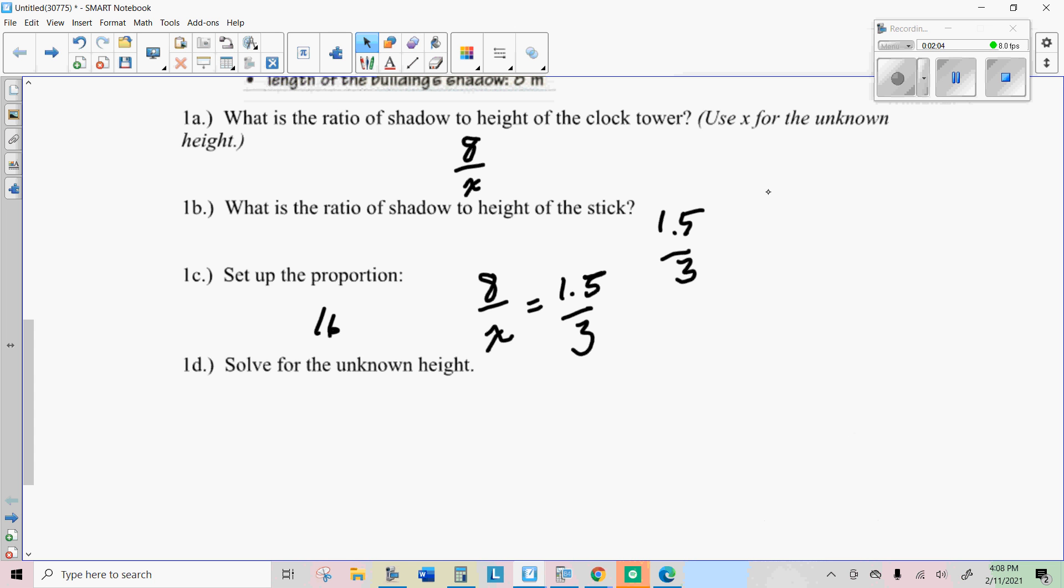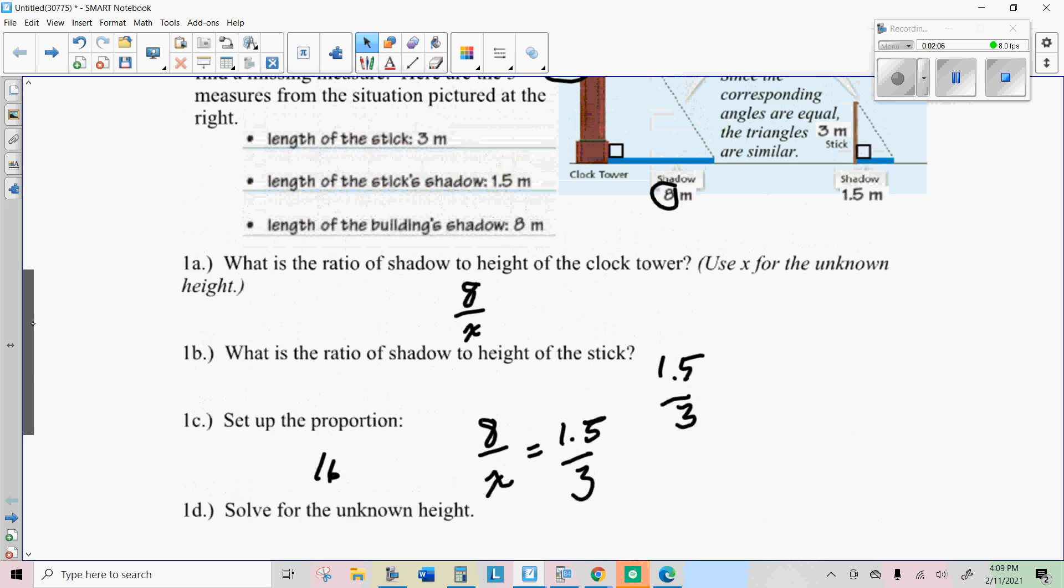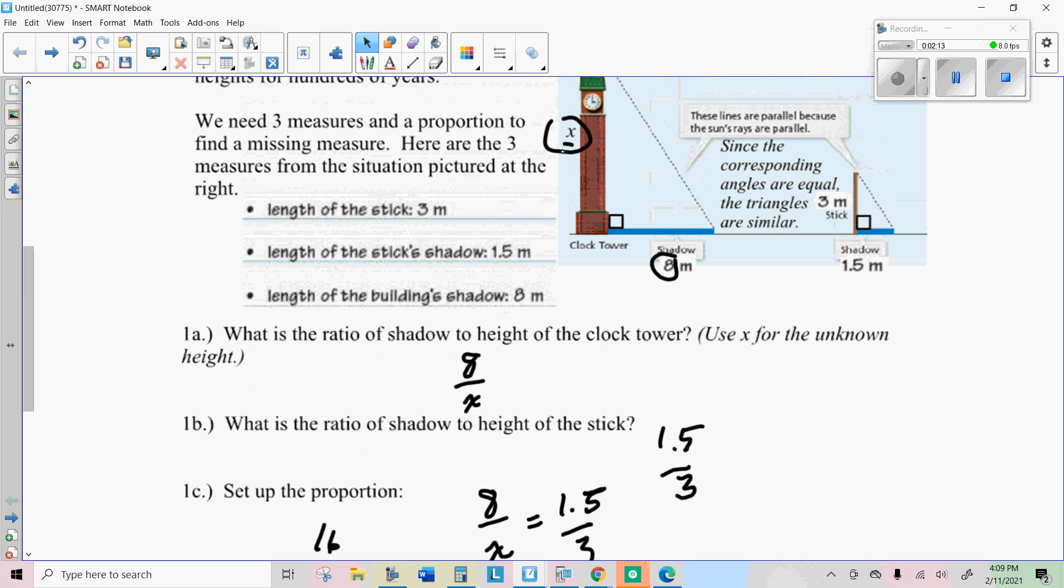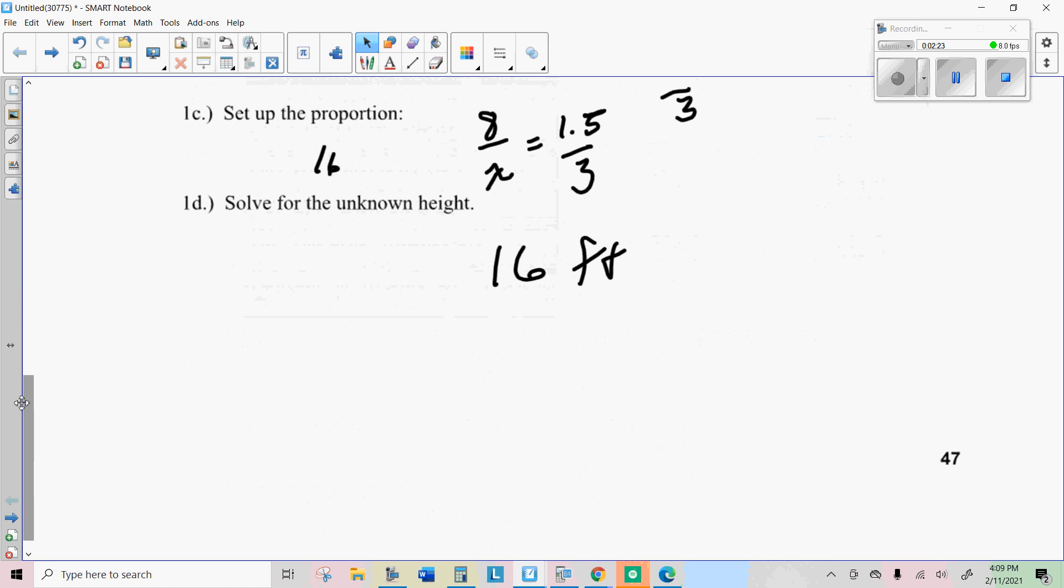And that makes sense because, remember, if these are similar triangles, things are proportional. So notice that if this is 16 and this is eight, the height is twice the shadow length, which is also true on this stick.